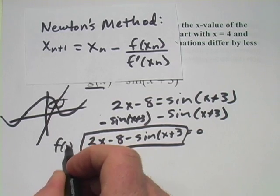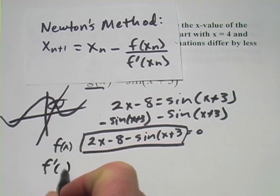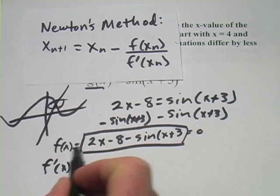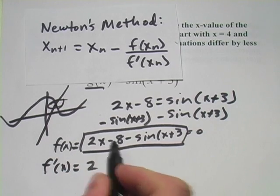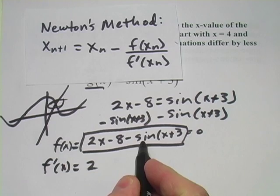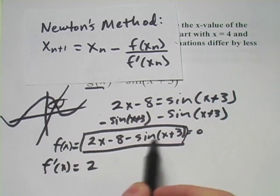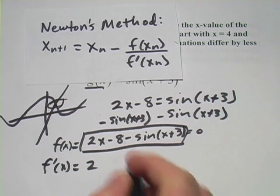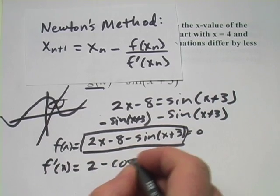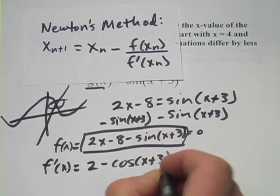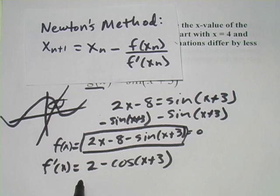So if this is f(x), then f'(x) is, well, that would just be 2. The -8 would disappear and the derivative of sin(x + 3) is just going to be -cos(x + 3). So there's our f'(x).